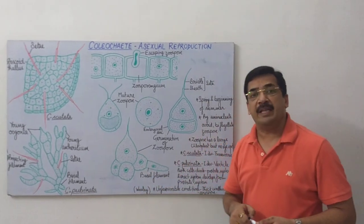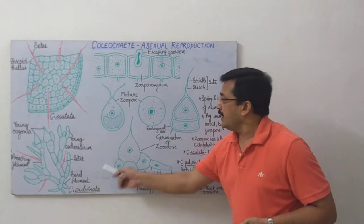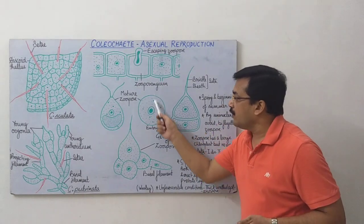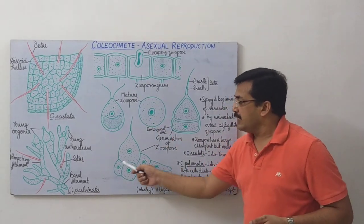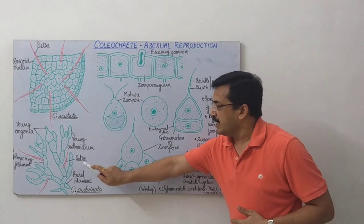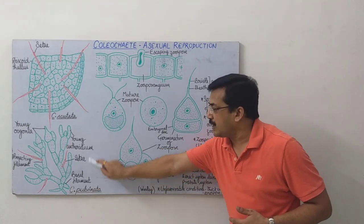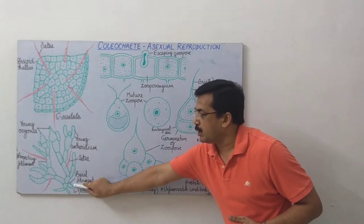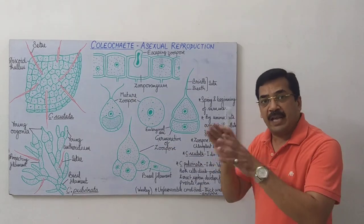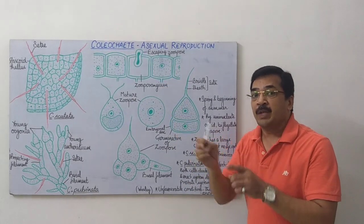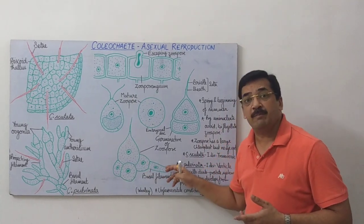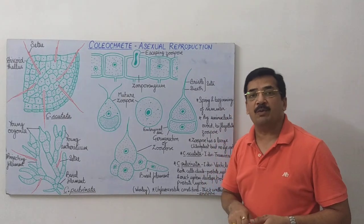Wahi agar main baat karun Coleochaete pulvinata ki, jo ek heterotrichous species hai, yahaan par zoospore mein ya deflagellated zoospore mein jo pehla division hota hai, woh transverse nahi hota, vertical hota hai. Aur jo do daughter cells banti hain, yeh lagaataar divide karke prostrate system ka formation karti hain. Jaise maine aapko pichle video mein bataya tha, Coleochaete pulvinata mein — yaani heterotrichous habit wali species mein — do systems hote hain: ek prostrate system aur ek erect system. Toh jab yeh zoospore se germination hoga, to jo do vertical cells banengi, woh seedha erect system nahi banaengi. Vertical division ke baad bani dono daughter cells se keval prostrate system banega, aur is prostrate system se erect system ka formation aur development hoga.